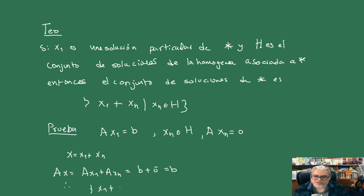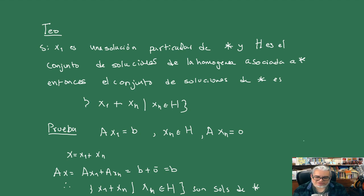Entonces lo que estamos diciendo es que este conjunto x₁ más xh son soluciones. Ahora, quisiéramos ver que esas son absolutamente todas las soluciones. Vamos a tomar una solución y vamos a tratar de construir la xh adecuada.